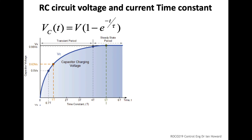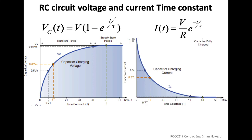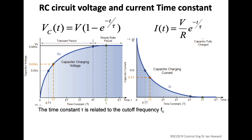So the voltage across the capacitor slowly charges up toward the target value — the applied voltage — following a (1 - exponential decay) function. In contrast, the current is purely an exponential decay: it starts at a high value of V/R and decays to zero after infinite time. The time constant is also related to the cutoff frequency: fc equals 1/(2*pi*tau), so fc equals 1/(2*pi*RC).